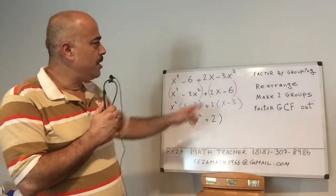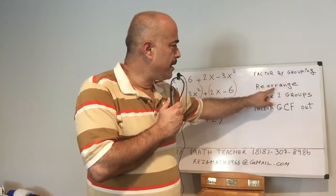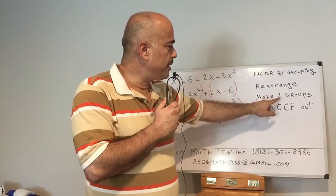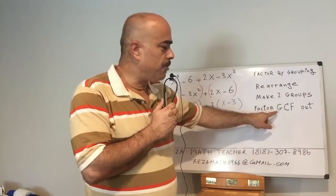So for factoring by grouping: rearrange the problem, make two groups, and factor the GCF out on each group.